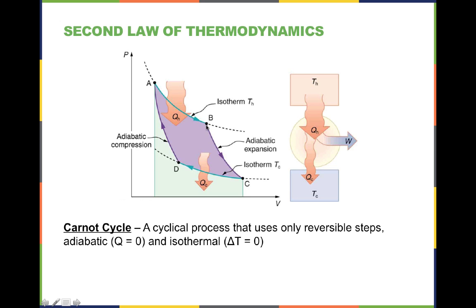Then there's adiabatic expansion with no heat exchange, so expansion continues and temperature falls. Then there's isothermal contraction with heat loss, and then adiabatic compression with the temperature going down. This shows a hot reservoir and a cold reservoir with heat transfer from the warm side. The unique aspect of the Carnot cycle is keeping temperature constant in part of the cycle and keeping heat transfer constant in the other part.